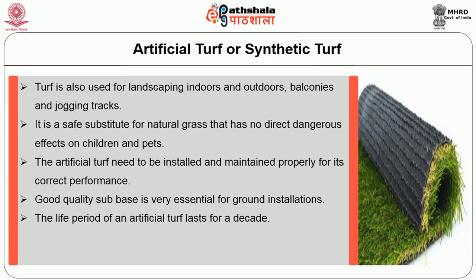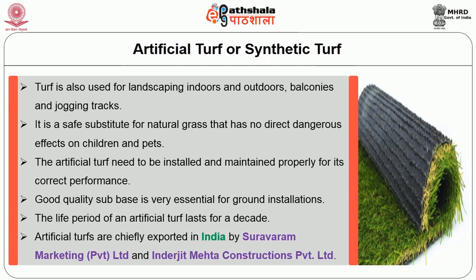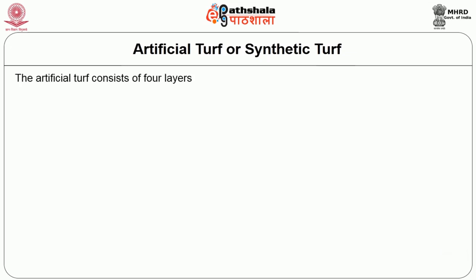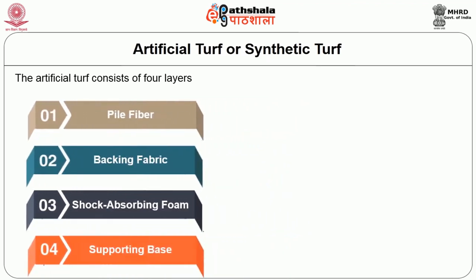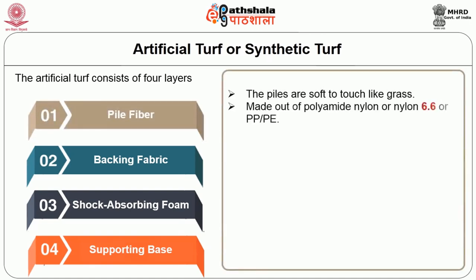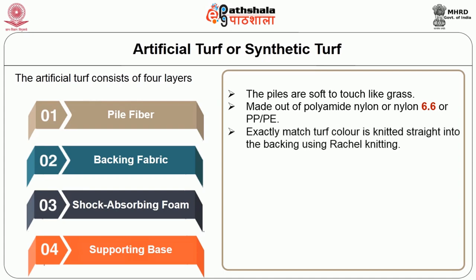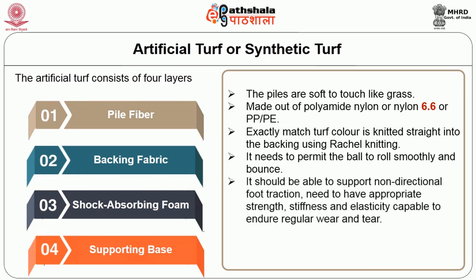The life period of artificial turf lasts for a decade. Artificial turf is chiefly exported in India by Suryavarma's Marketing Limited and Indrajit Meta Construction Private Limited. The artificial turf consists of four layers: pile fibers, backing cloth, shock absorbance layers and supporting base. The pile fibers are soft to touch like grass. They are made out of polyamide nylon, nylon 6.6, PP or PE. The pile fibers that exactly match turf color are knitted straight into the backing using raschel knitting. They need to permit the ball to roll smoothly and bounce, and should support non-directional foot traction. They need to have appropriate strength, stiffness and elasticity capable of enduring regular wear and tear.